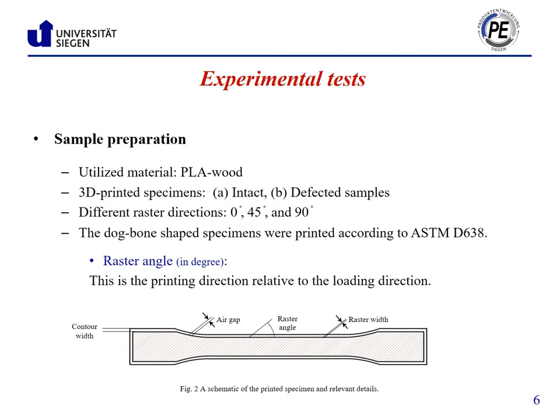In preparation of the specimens, a standard was used and the dog bone specimens were printed based on the ASTM standard. Specimen dimensions are presented here. We used PLA wood material and printed intact and defected specimens with different raster directions. The specimens are printed with three raster orientations.